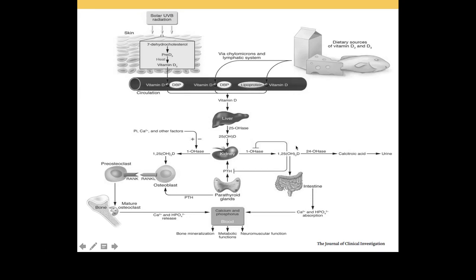If you check 1,25-hydroxyvitamin D levels in nutritional rickets, they are high as a compensatory mechanism. Without first correcting the vitamin D deficiency, you will see high 1,25 levels and may mislabel the patient as having vitamin D dependent rickets. Therefore, we advise checking 25-hydroxyvitamin D first. If it is not in the normal range, correct it. Once it is normal, then check 1,25 levels — if low, consider vitamin D dependent rickets type 1; if high, consider vitamin D dependent rickets type 2.